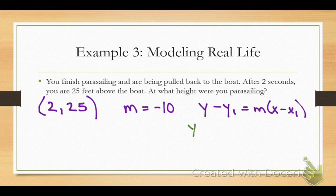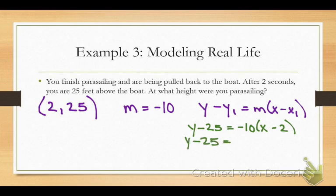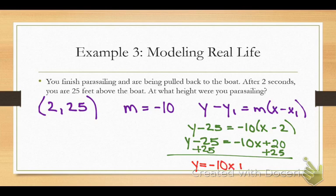I want to show you the formula. Now I make my substitutions. Did you substitute the numbers like that? Y minus 25 equals negative 10 times x minus 2. But now I need to get it in slope-intercept form so I can see when zero seconds have passed, meaning I haven't been reeled in at all, what height was I at? What's negative 10 times x? Negative 10x. What's negative 10 times negative 2? Positive 20. So now what do I do to both sides to solve for y? Add 25.